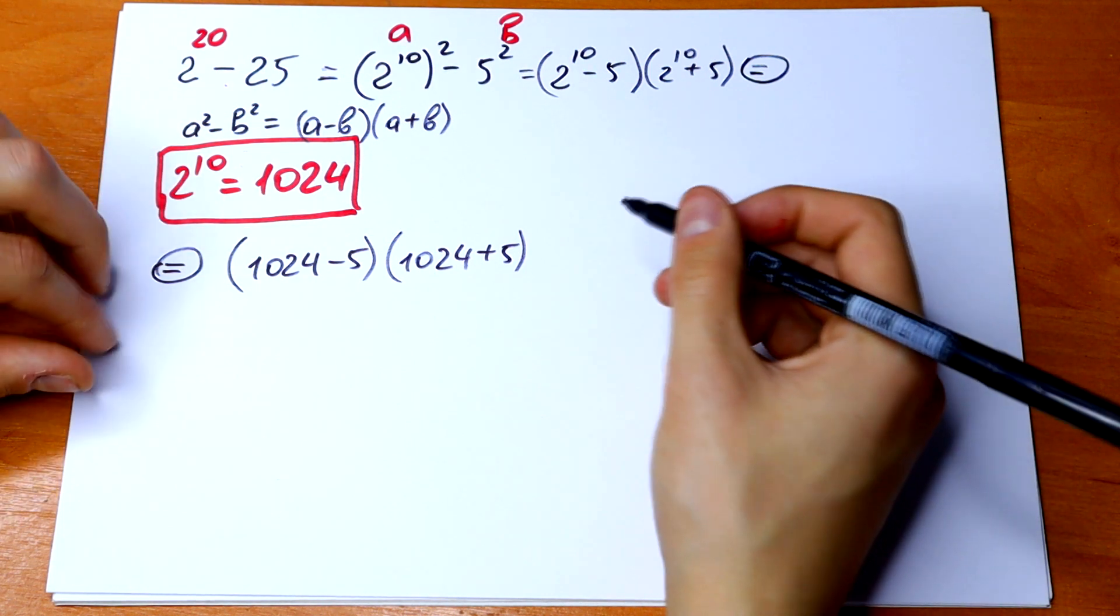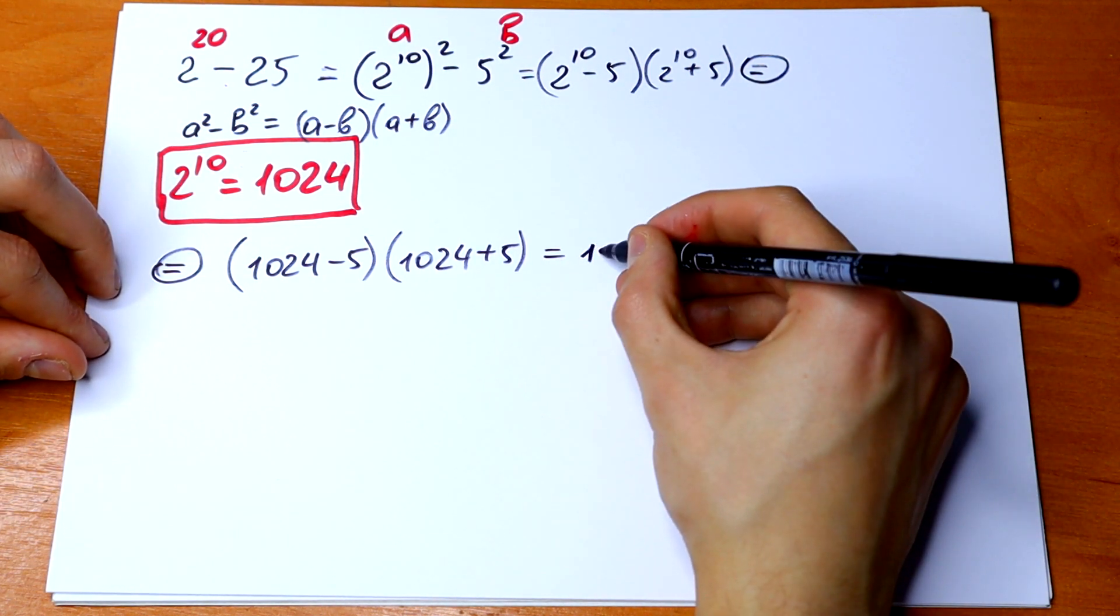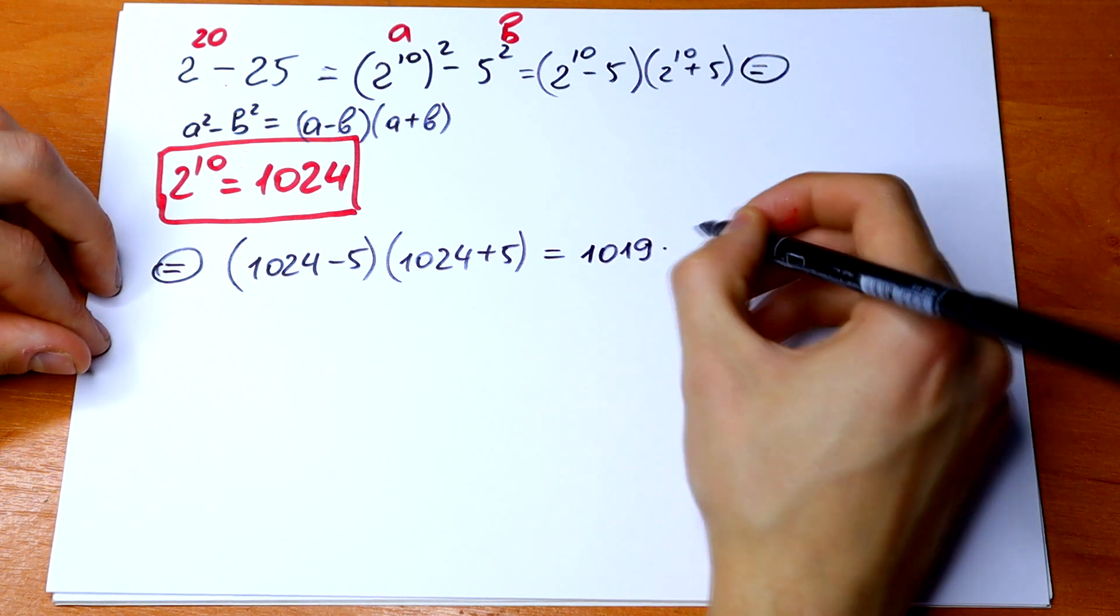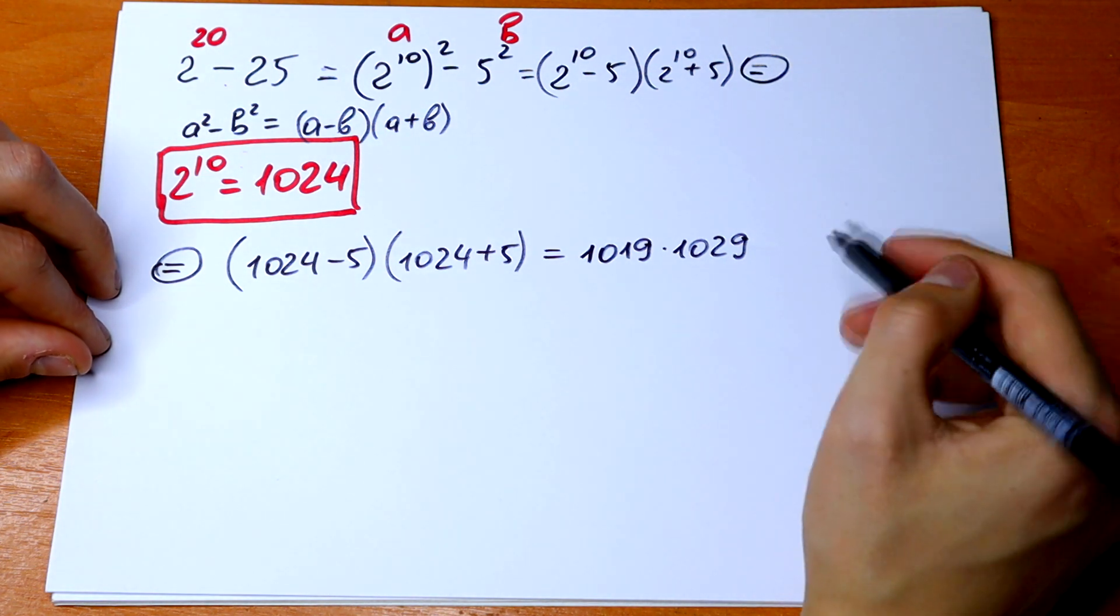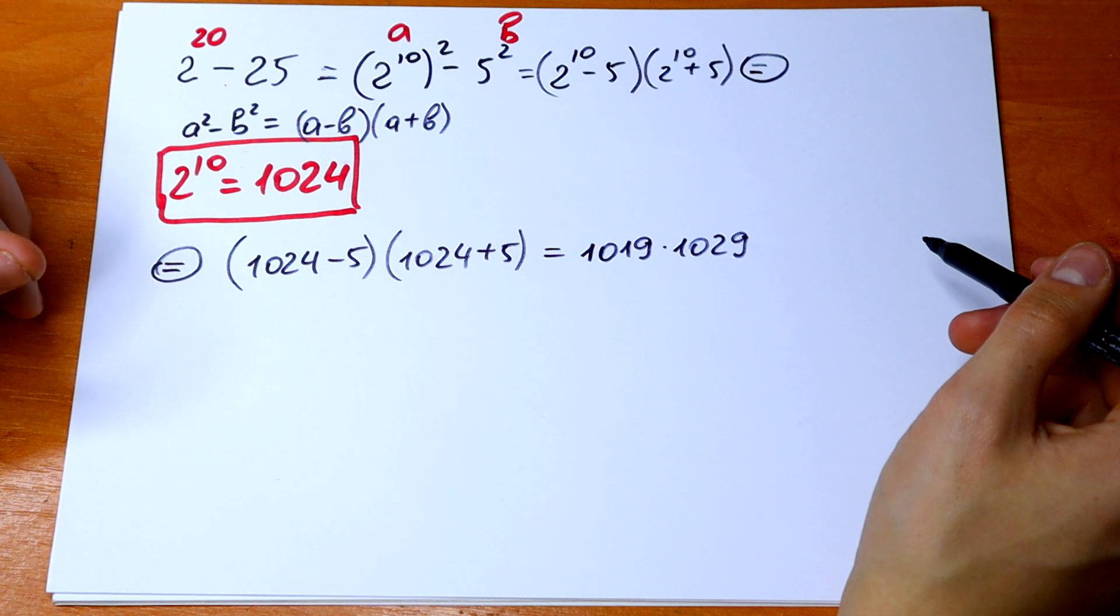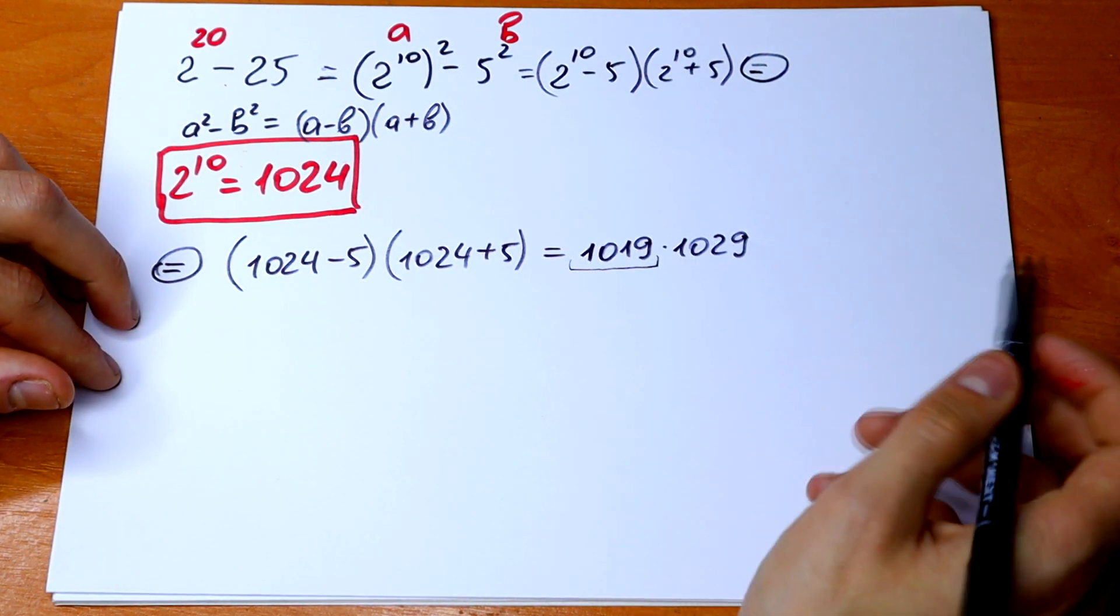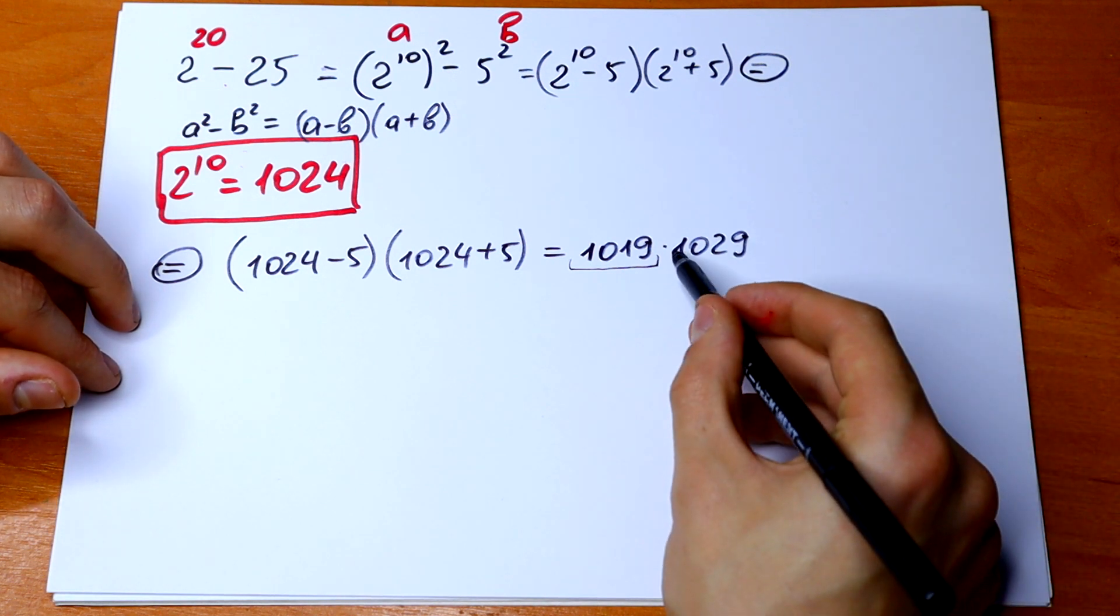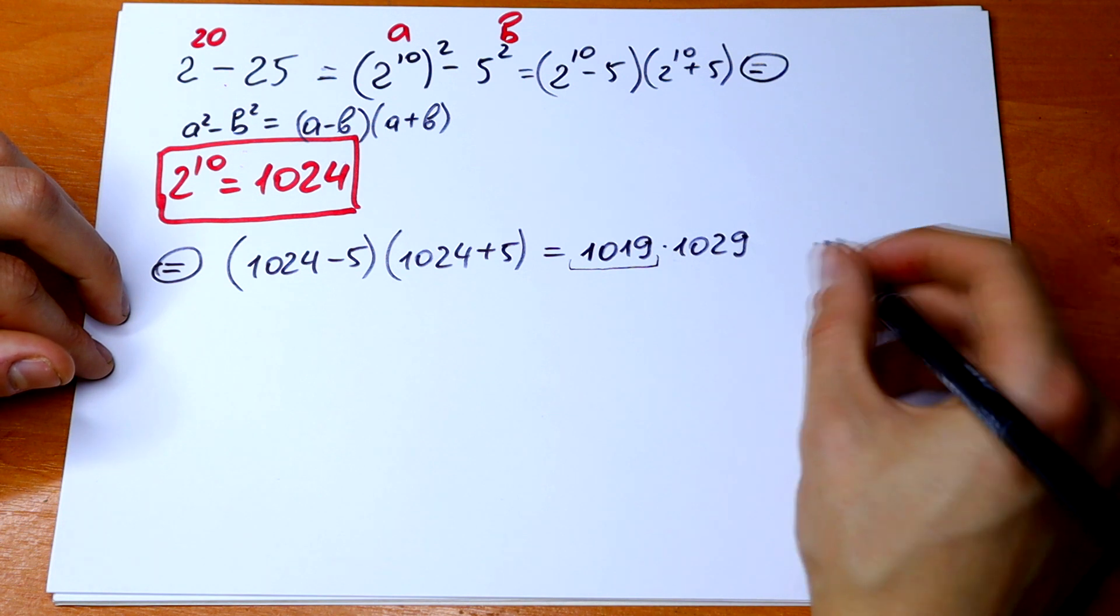We can calculate this. We will have 1019 times 1029. We can calculate this with our telephone, but let's use some algebra trick. So let's express this 1019 as 1000 plus 19 and 1029 as 1000 plus 29. So let's do this.